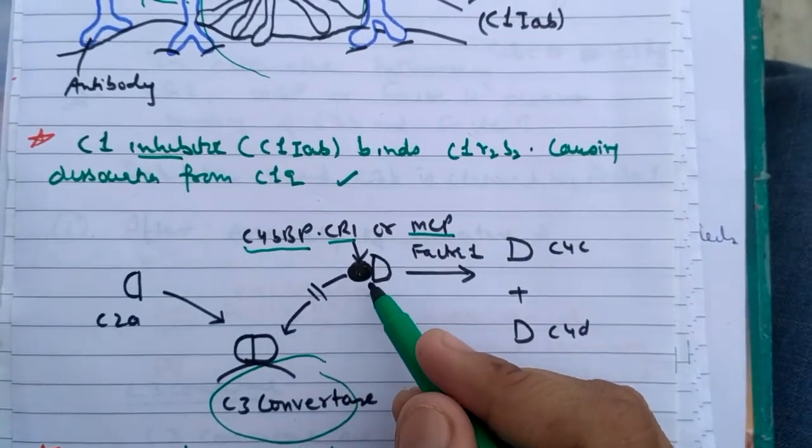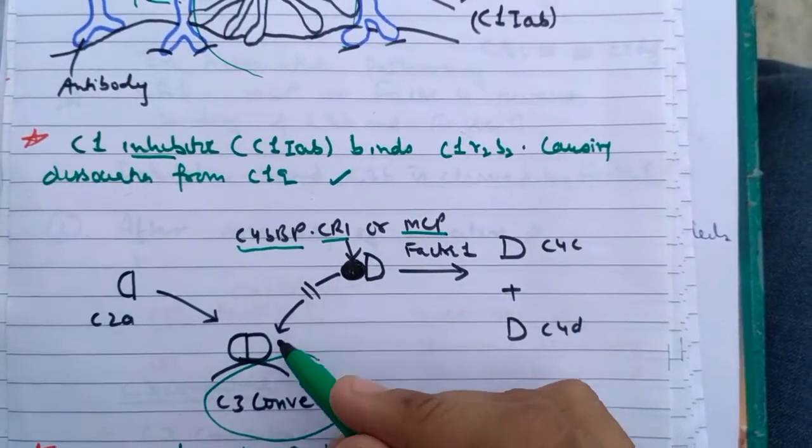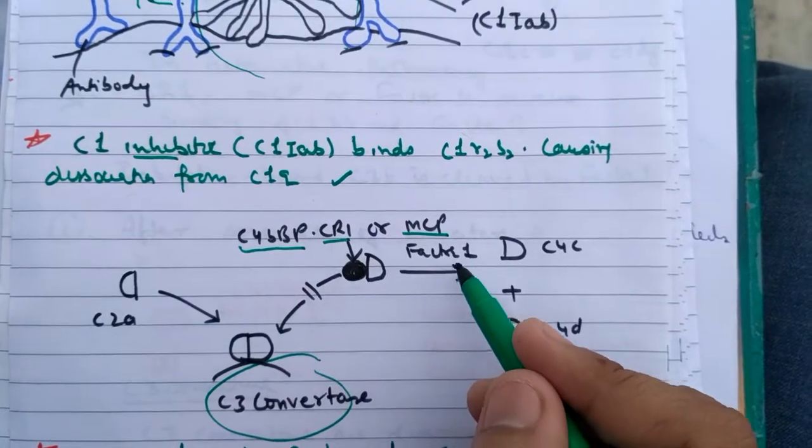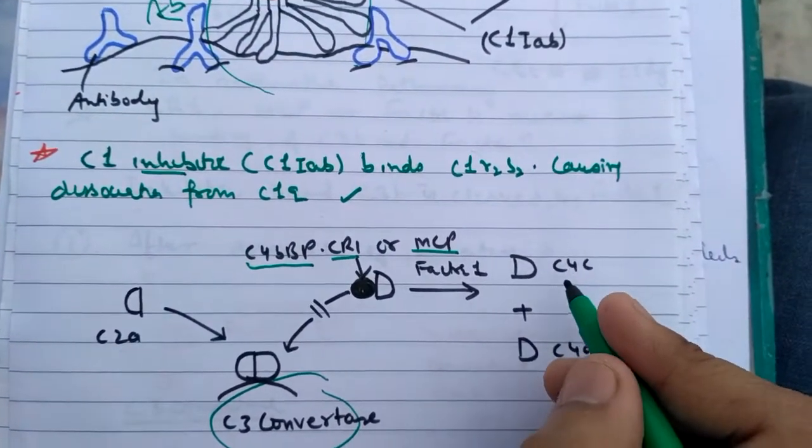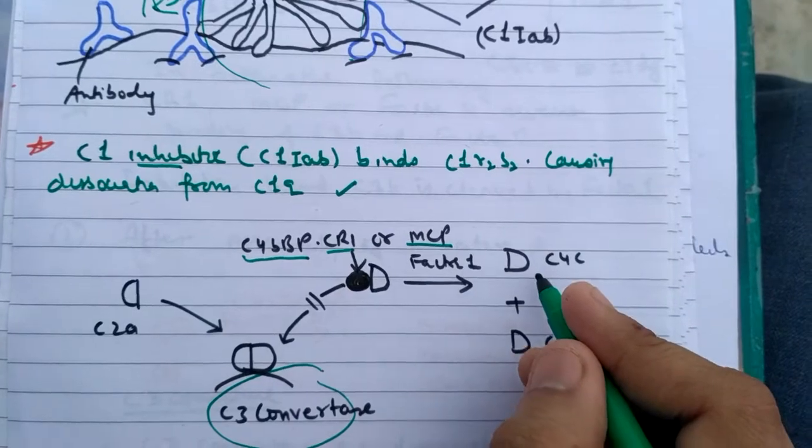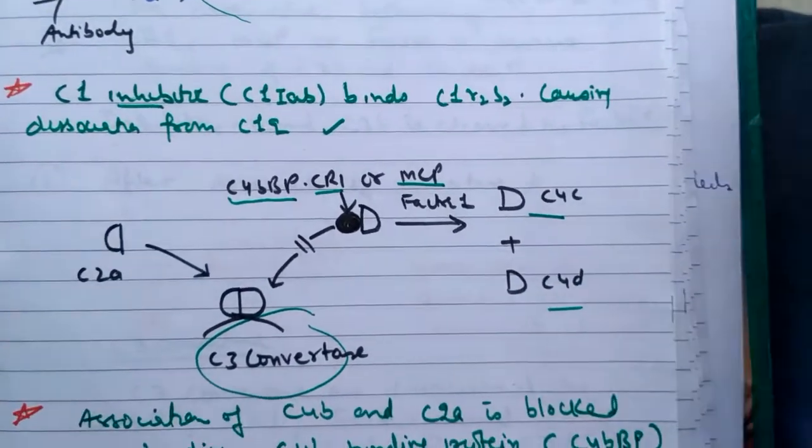Factor 1 will dissociate and break them into C4C and C4D.